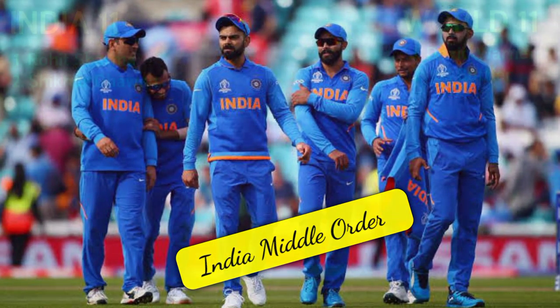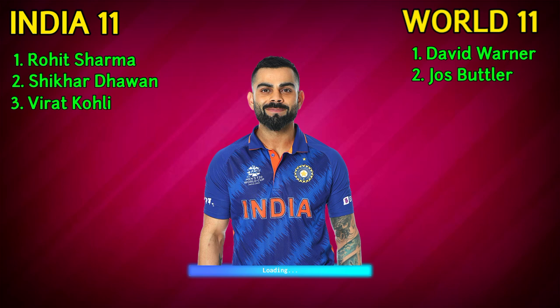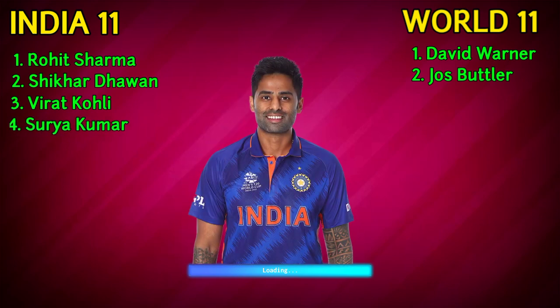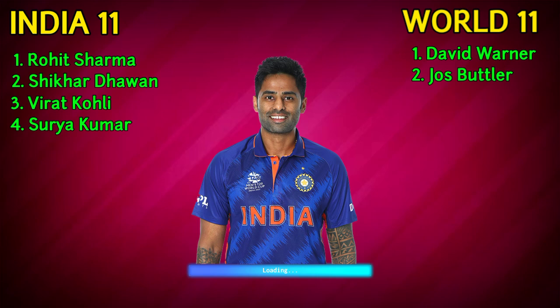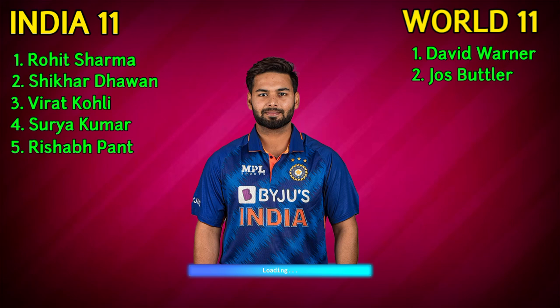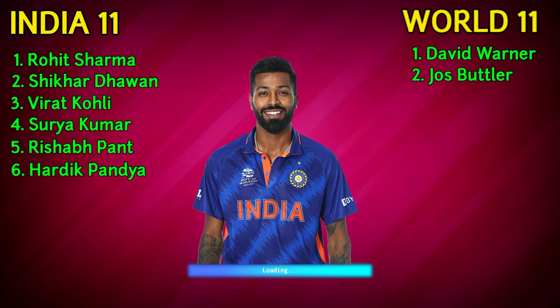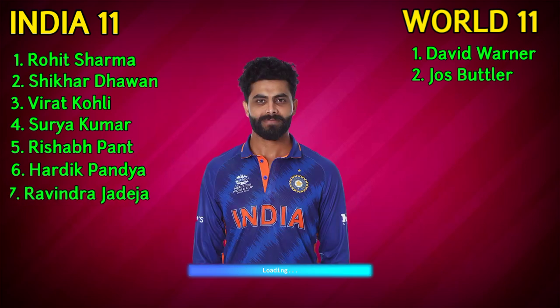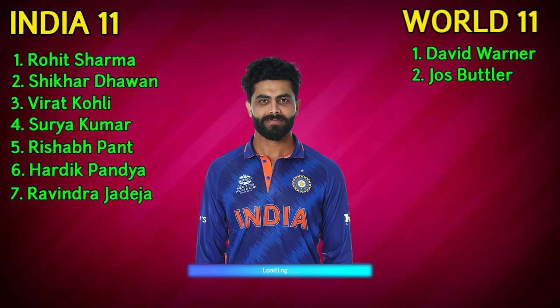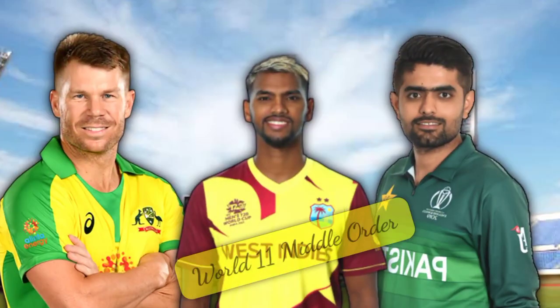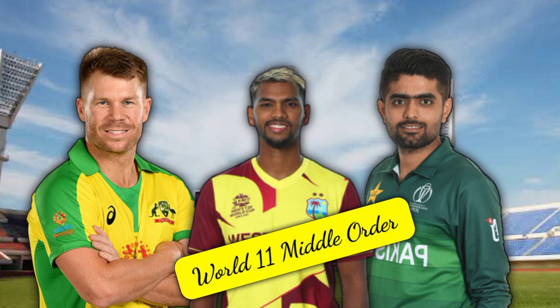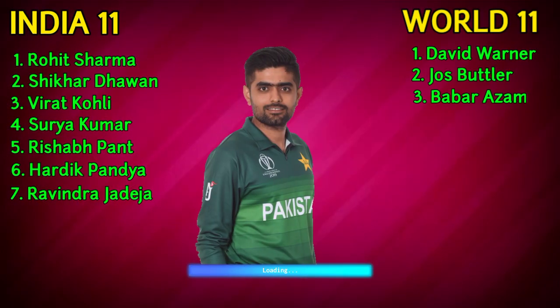India team middle order: number 3 Virat Kohli, right-handed batsman. Number 4 Suryakumar Yadav, right-handed batsman. Number 5 Rishabh Pant, wicket keeper. Number 6 Hardik Pandya, all-rounder. Number 7 Ravindra Jadeja, all-rounder.